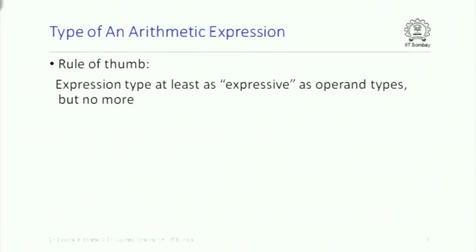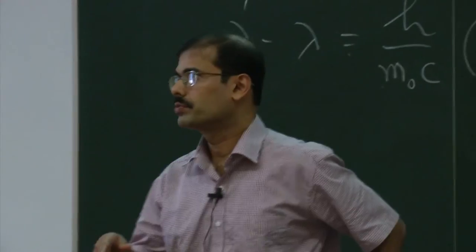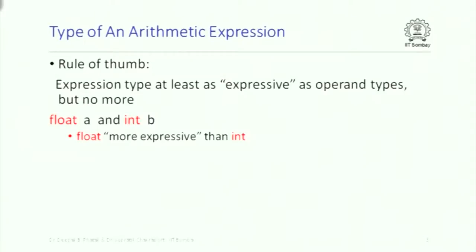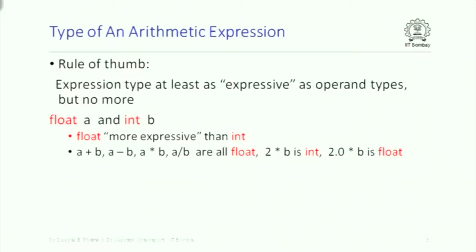When you have an arithmetic expression in which there is a mix of types — for instance a floating point number being added to an integer — the general rule of thumb is that the expression itself has a type which is at least as expressive as its operands. So if you add float and int, you will get a float, but no more — you are not going to get double, because double is even more expressive than what you require.